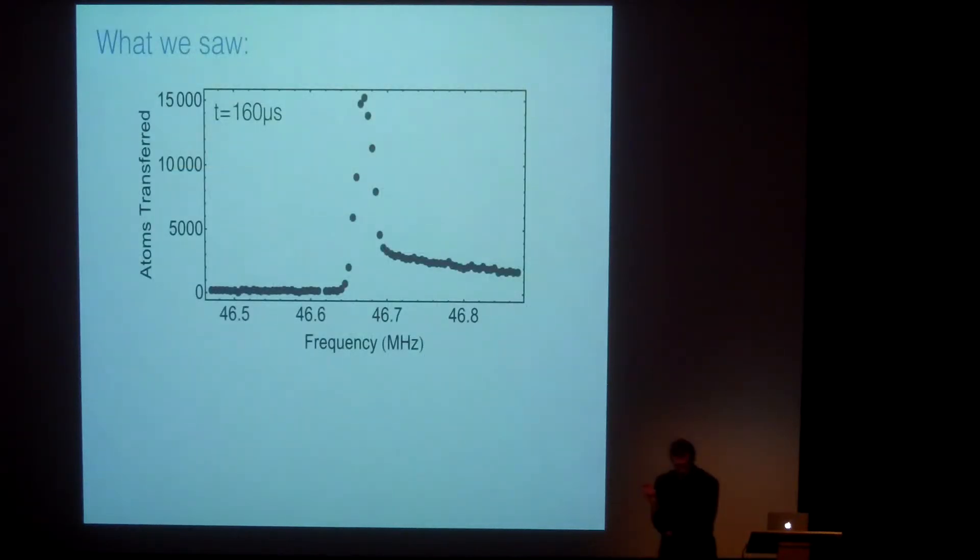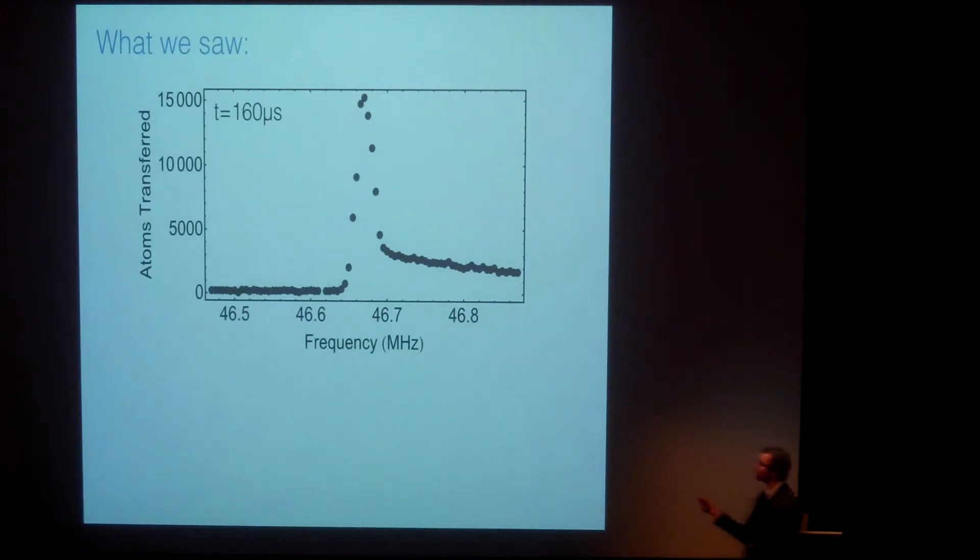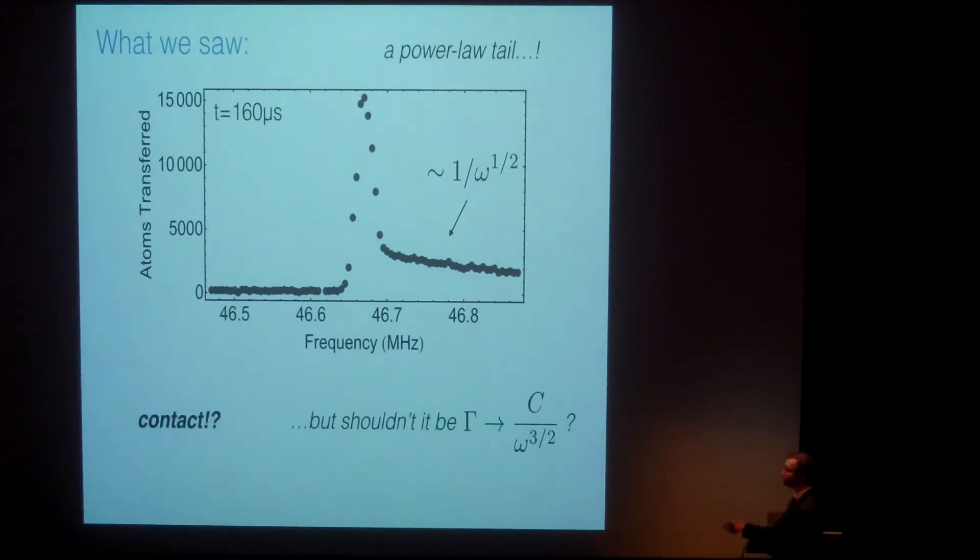One thing that's very different about P-waves is that if you go to the Feshbach resonance, to the field in which the scattering volume diverges, that's not P-wave unitarity. So you don't get a pi over two phase shift in those scattering channels. So there's something very different about P-waves, essentially because it's a narrow resonance. Here's what we saw around the P-wave resonance. We took one of the spectrum. This is the RF frequency, and here's where the single particle feature should be, and here's a tail that looks a lot like the contacts we've been measuring for S-waves. But the scaling of this goes like one over frequency to the one half. And that's strange because it should be one over frequency to the three halves if you're looking at a contact.